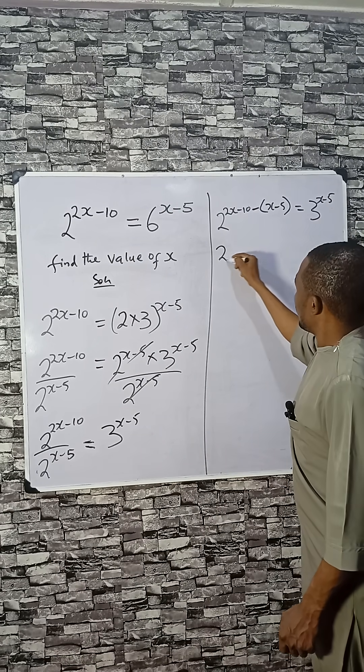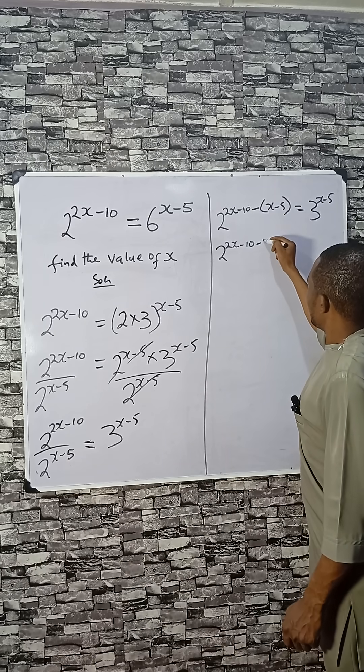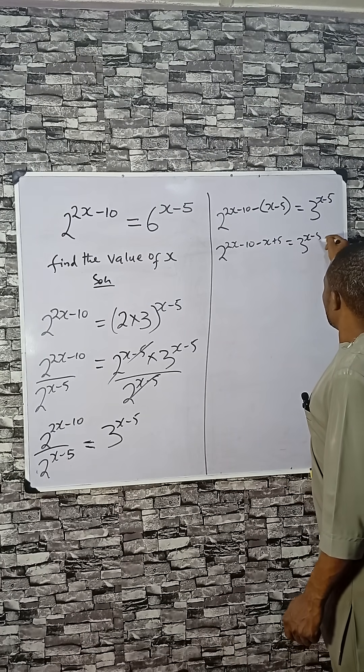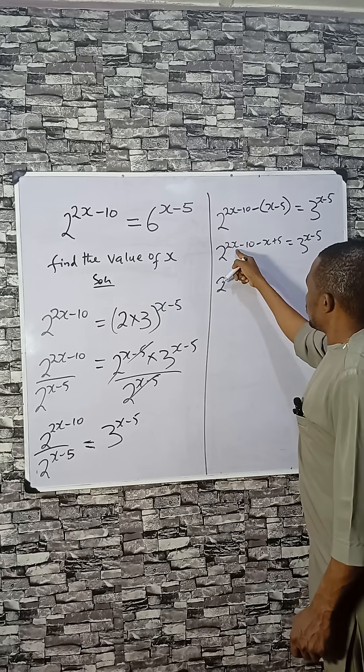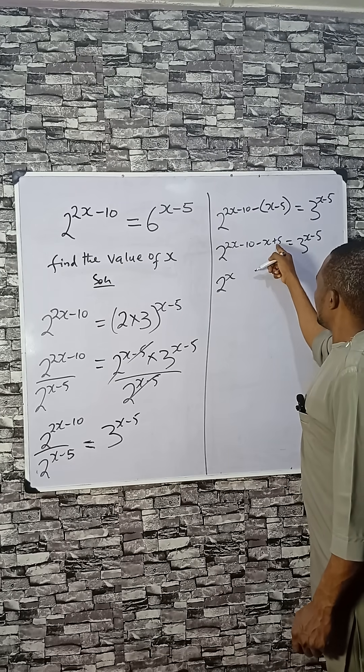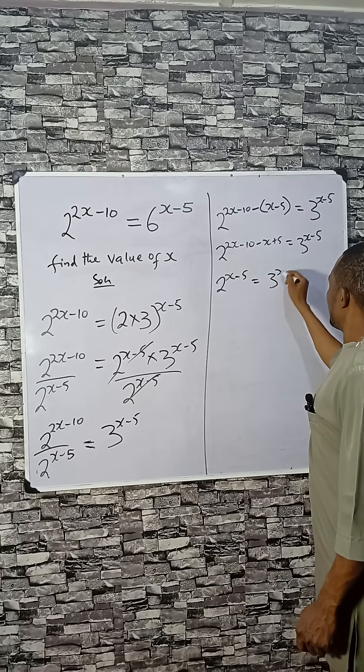So 2x minus 10 minus x plus 5 equals 3^(x-5). That gives us 2x minus x, which is x, minus 10 plus 5, which is minus 5, equals 3^(x-5). So x minus 5 equals 3^(x-5).